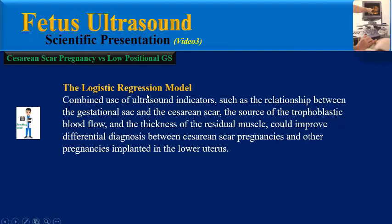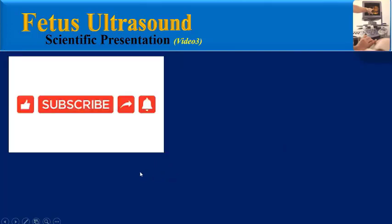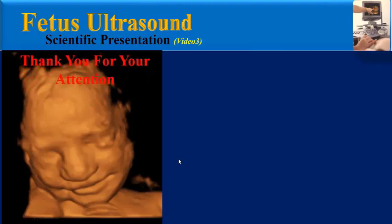According to the logistic regression model, combined use of ultrasound indicators — such as the relationship between the gestational sac and the caesarean scar, the source of the trophoblastic blood flow, and the thickness of residual muscle — improves differential diagnosis between caesarean scar pregnancy and other pregnancies implanted in the lower uterus. I suggest also watching others of my videos that are related to this topic. Thank you for your attention.